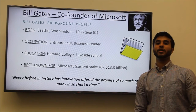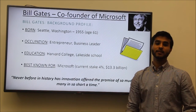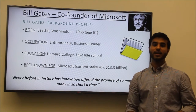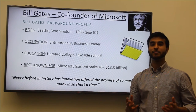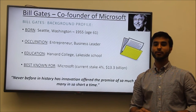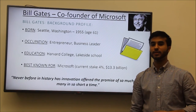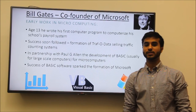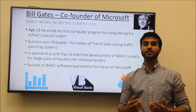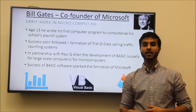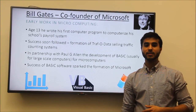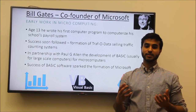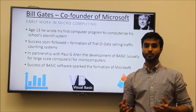Bill Gates was born in 1955 and co-founded Microsoft with school friend Paul Allen. The business leader accelerated the development of operating systems for commercial use and set the standard for businesses. As Microsoft expanded, Gates' fortune reached $78.7 billion, though his current stake of 4% is worth $13.3 billion. In his early years, he wrote a computer program to computerize the school's payroll system, and his abilities in computer science led to the formation of his initial company called Traf-O-Data, where they sold traffic data to large companies. During his junior years at Harvard, Gates dropped out to form Microsoft with Paul Allen.